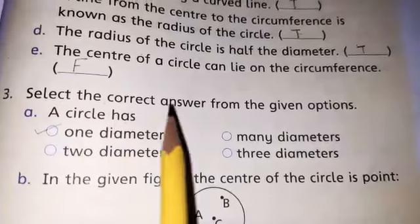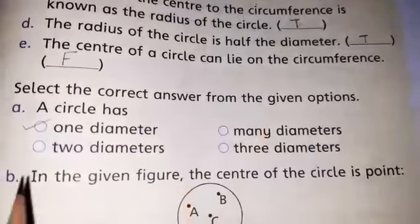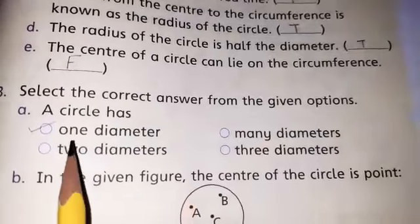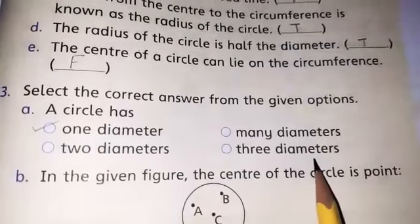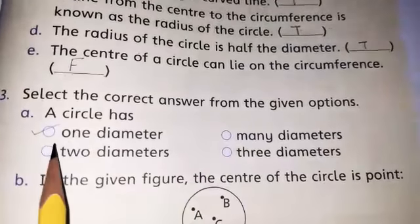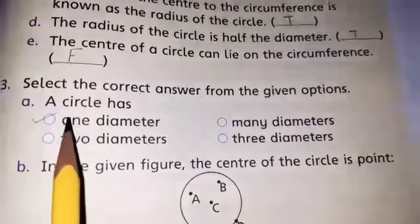Question 3: Select the correct answer from the given options. Circle has 1 diameter, 2 diameters, many diameters or 3 diameters. Circle has 1 diameter. So take it.